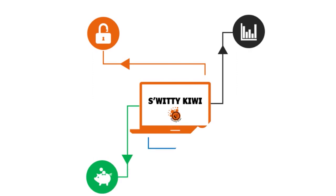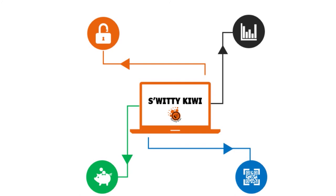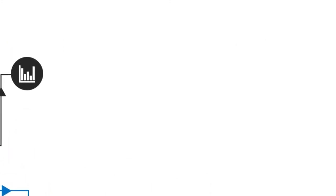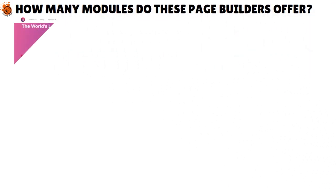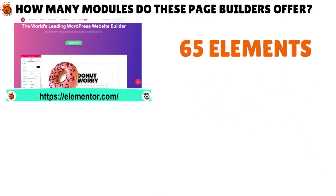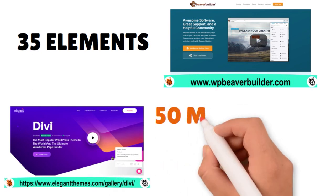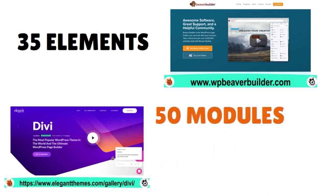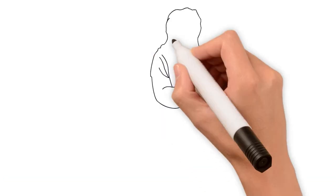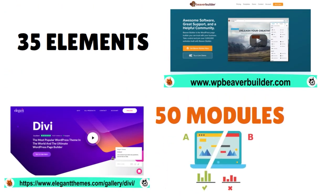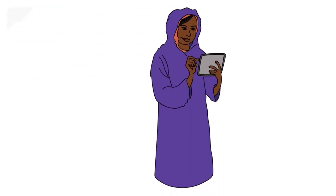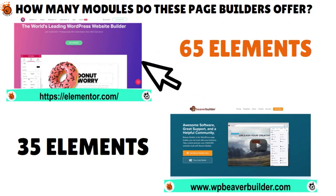Welcome back, folks, to the final section of the Awesome Sweetie Kiwi Show. Before we leave, here are a few things to know: Elementor offers around 65 elements, Beaver Builder offers around 35, while Divi provides around 50. There are third-party add-ons for all builders, and all are mobile responsive. It is possible to A/B split test different modules only on Divi. You can use Google Optimize for other page builders. And among these three, only Elementor has a free version — very important to know.